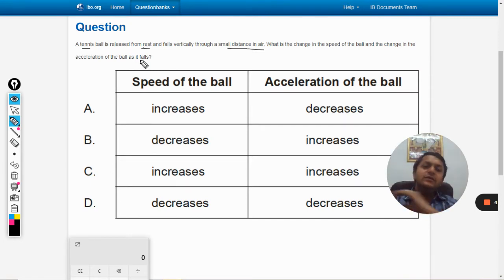As it falls, let's say this is the ball here. The ball is falling, so u equals zero because it has started from rest.